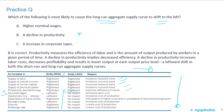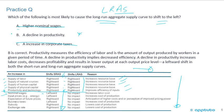Higher nominal wages is a leftward shift, but only in the short-run aggregate supply — no impact on the long run. When talking about long-run aggregate supply shifts, only the first five items matter: supply of labor, natural resources, human capital, physical capital, and productivity. From nominal wages onward, there's no impact on long-run aggregate supply. Similarly, taxes have no impact on the long run. So the correct answer is B — a decline in productivity.